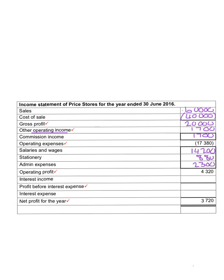Then we will add all these expenses together to get the total operating expenses. If we use the gross profit plus other income less operating expenses, we will determine the operating profit. Operating profit is the profit that we made on all the operations of the business.